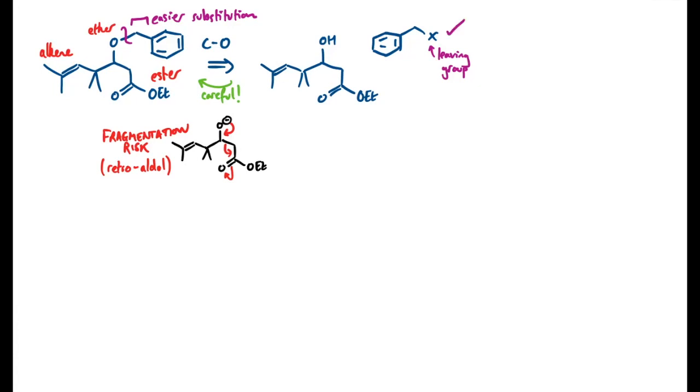Okay, disconnecting further, I notice that that hydroxyl group is in a 1-3 relationship to the ester, and 1-3 difunctionalized compounds are often made by enolate chemistry. In this case just using a normal aldol reaction, that will put a disconnection here and take me back to this aldehyde and also ethyl acetate.